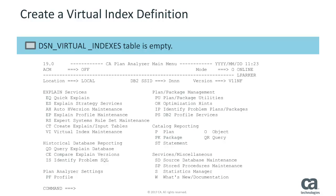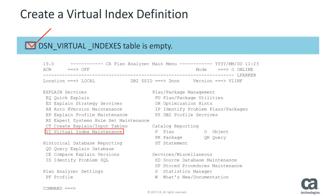Because Lynn is using the Virtual Index Maintenance feature for the first time, she verifies that her DSN Virtual Indexes table exists and is empty. If she did need to create this table, Lynn knows that she can use the Create Explain Input Tables option. Lynn starts creating her Virtual Index Definition by typing VI in the command line and pressing Enter.